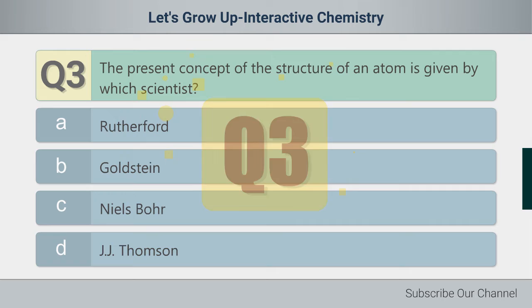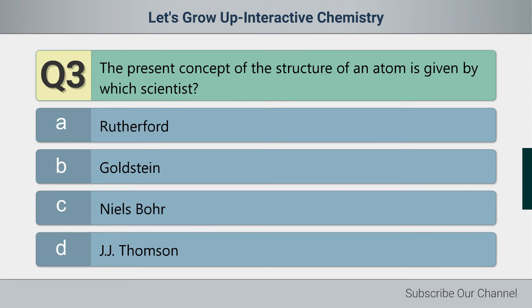Question number three. The present concept of the structure of an atom is given by which scientist? Option A: Rutherford. B: Goldstein. C: Niels Bohr. D: J.J. Thomson.